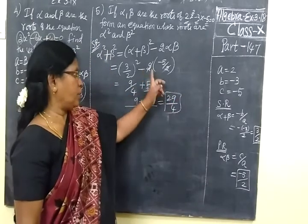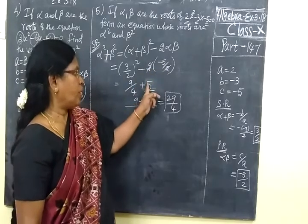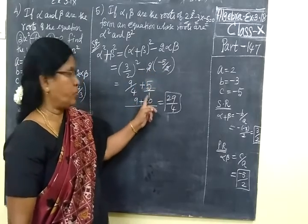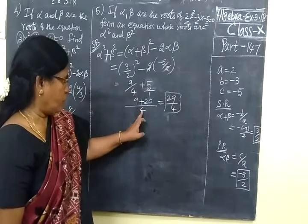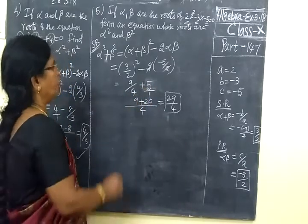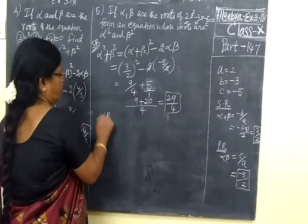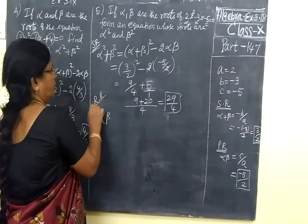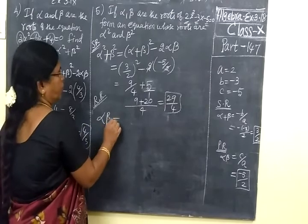2 cancels, 5 is there, 10 is there, 2 is cancelled. So LCM 4, cross multiply, 29 by 4. Then product of the root. Sum of the root is S. Product of the root is P.